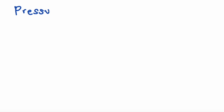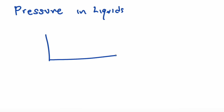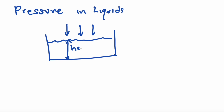The force is also the mass times the acceleration. Pressure in liquids: the pressure acts downward on the object and increases with depth. The formula for pressure in a liquid is density times gravity times height.